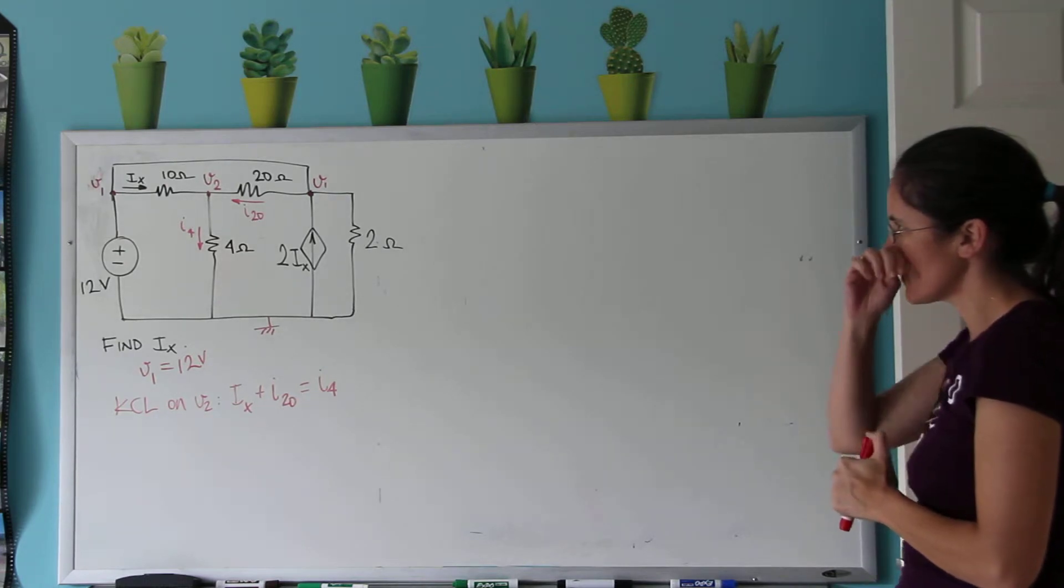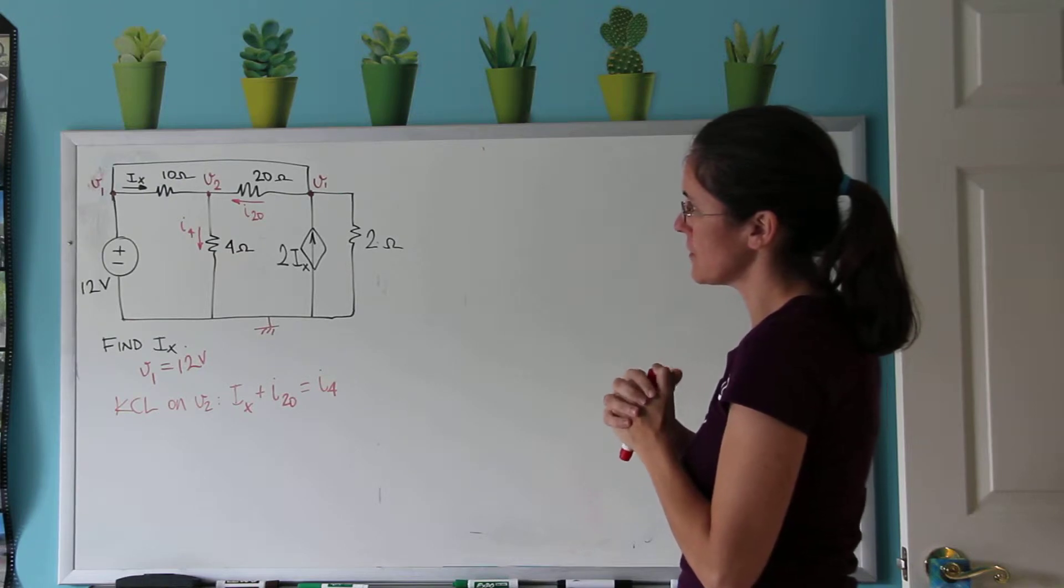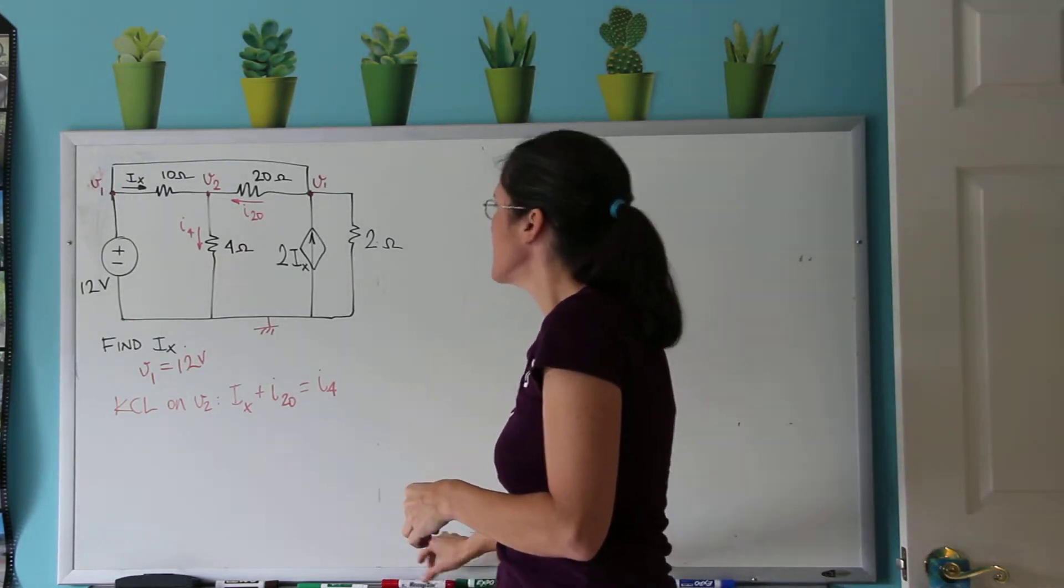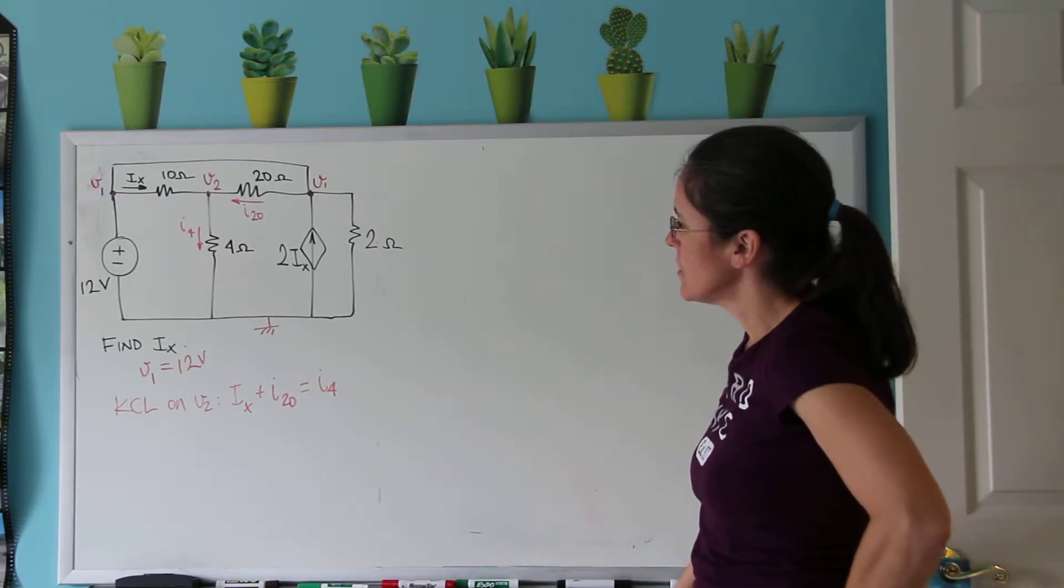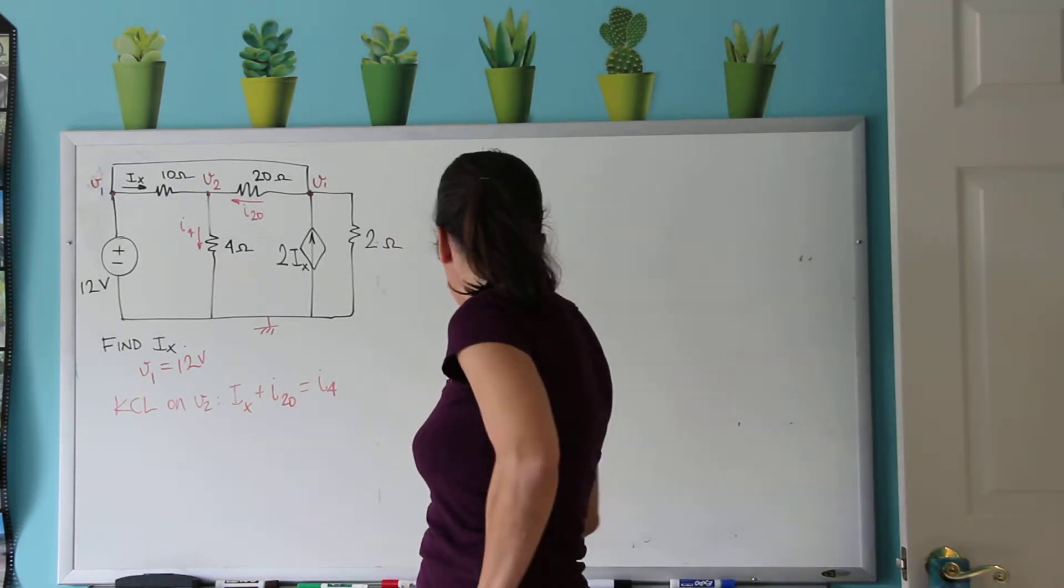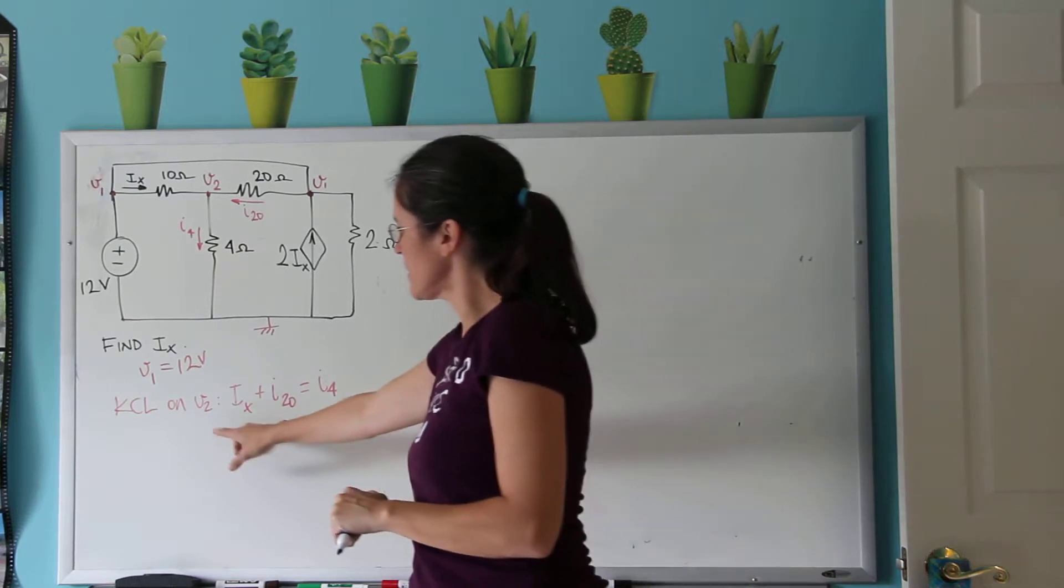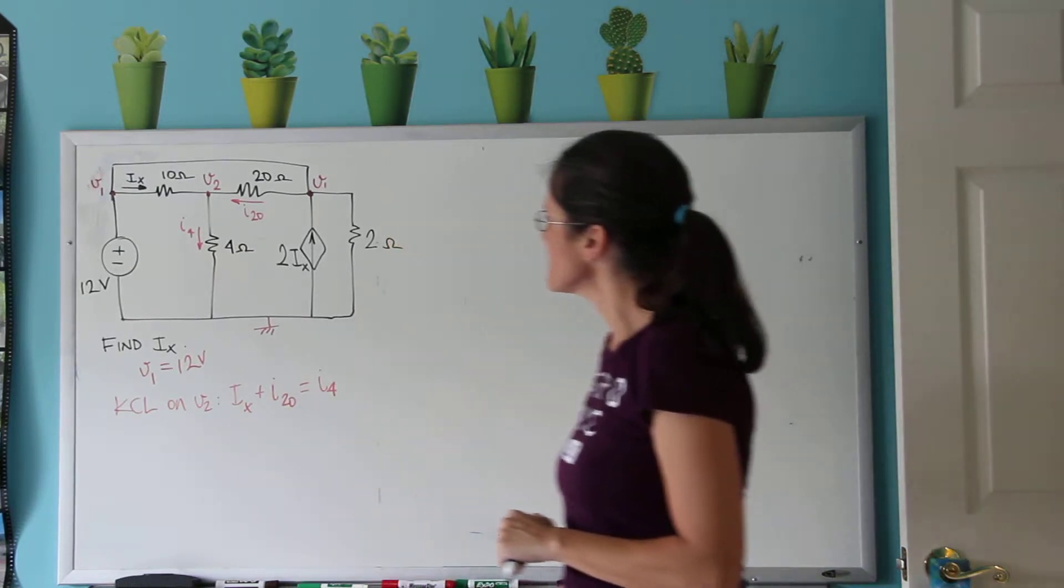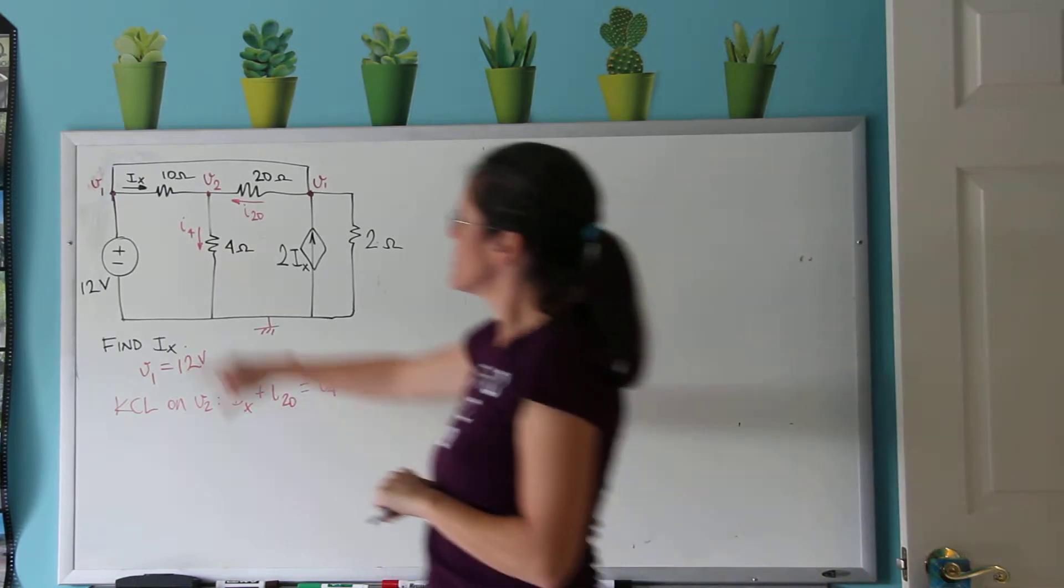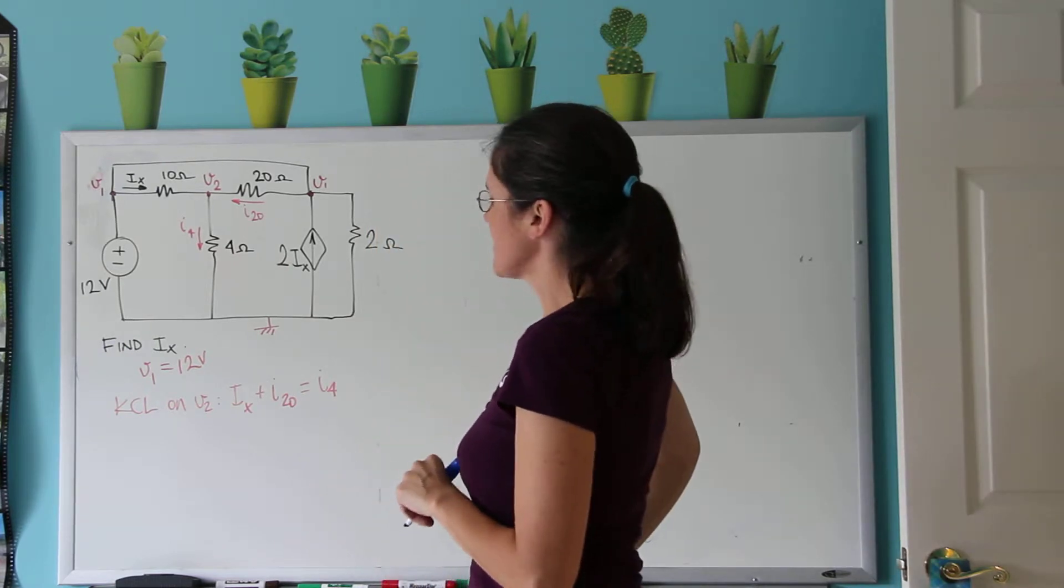Now I'm interested in writing I20 and I4 as a function of V1 and V2, maybe even Ix. I can write as a function of V1 and V2, even though at the end I really am interested in Ix. For now, it feels like I can find V2, and then V2 minus V1 divided by 10 is going to be Ix.